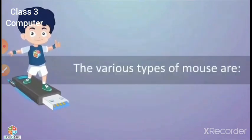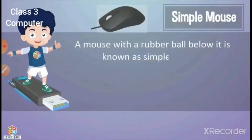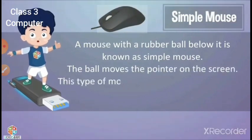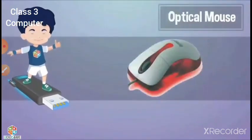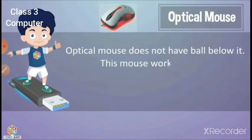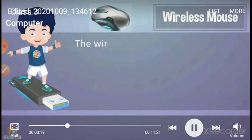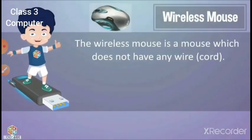The various types of mouse are: simple mouse — a mouse with a rubber ball below it is known as a simple mouse or ball mouse. The ball moves the pointer on the screen; this type of mouse needs a mouse pad. Next is optical mouse, which does not have a ball below it. Next is wireless mouse — a mouse which does not have any wire; it works like a remote.